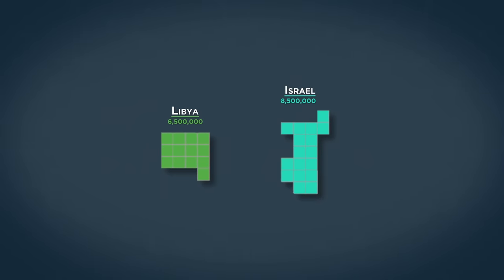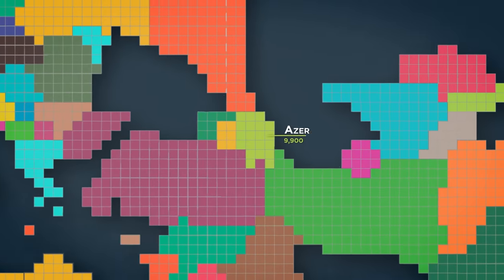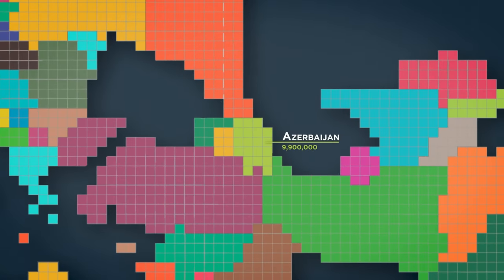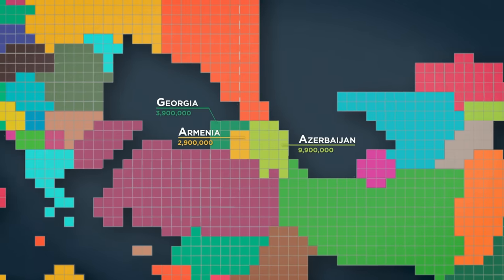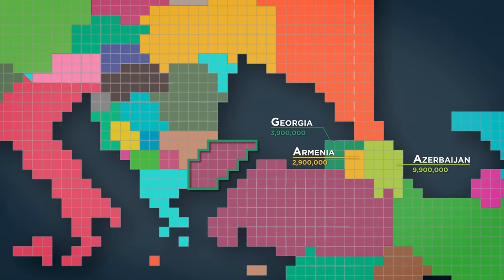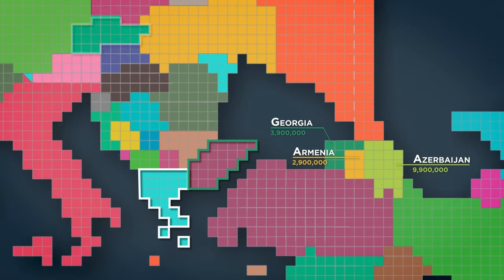Nearby Israel is also incredibly densely populated for its size, with even more people than the substantially bigger Libya. And over in the Caucasus, Azerbaijan is the dominant force, with more people than Armenia and Georgia combined, and over three times Armenia's population alone. Meanwhile, the European part of Turkey, while small in land, still has a population of 11 million people, which means that if it was its own country, excluding the whole population of Turks over in Anatolia, European Turkey would still be the continent's 14th most populous, with more people than Greece or the Czech Republic.